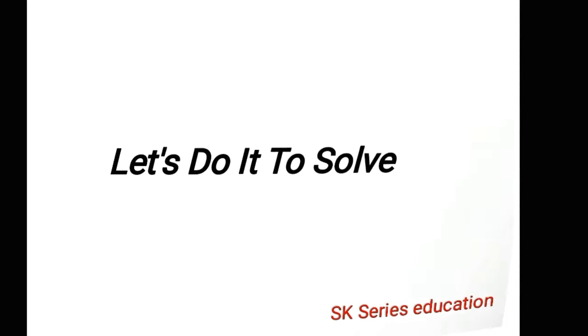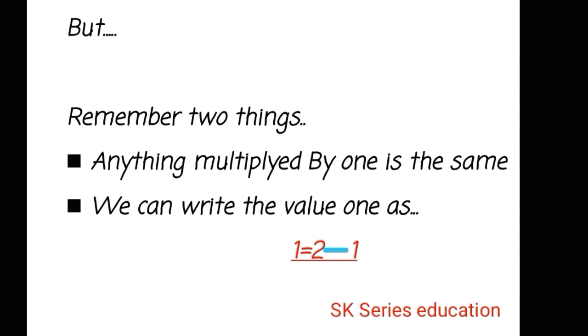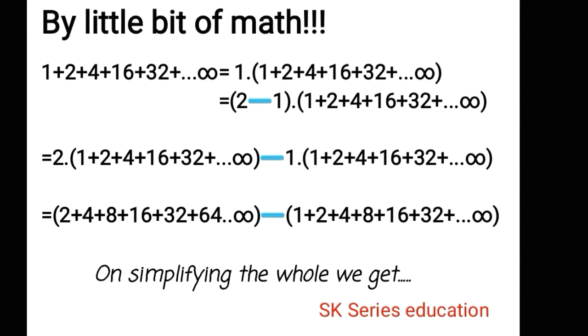Let's do it to solve, but you have to remember two things: anything multiplied by one is the same, and we can write the value of 1 as 2 minus 1. So I am simply multiplying this whole term by 1, and I am rewriting this 1 as 2 minus 1, and I am multiplying by splitting these terms like 2 times the whole equation minus 1 times the whole equation.